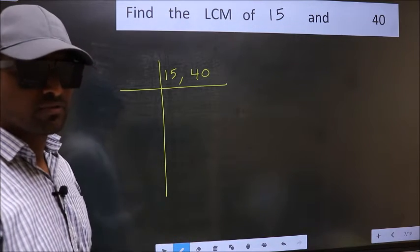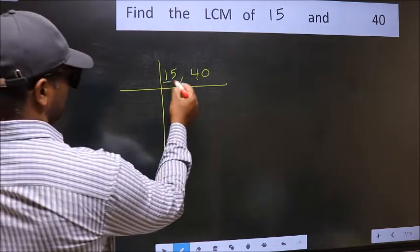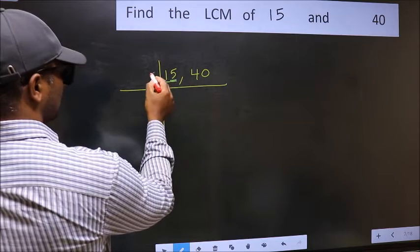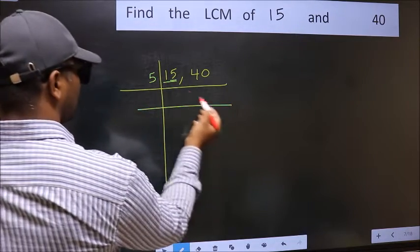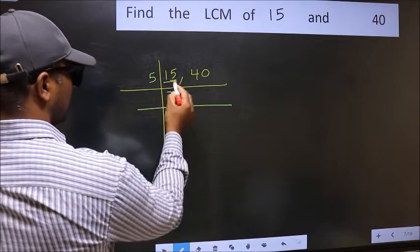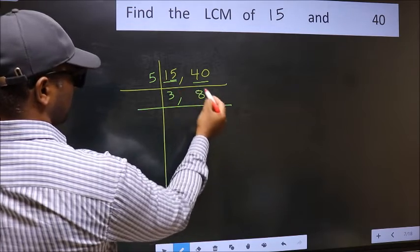Now you should focus on the first number which is 15 here. In this number, the last digit is 5, so take 5. When do we get 15 in the 5 table? 5 times 3 is 15. The other number, 40. When do we get 40 in the 5 table? 5 times 8 is 40.